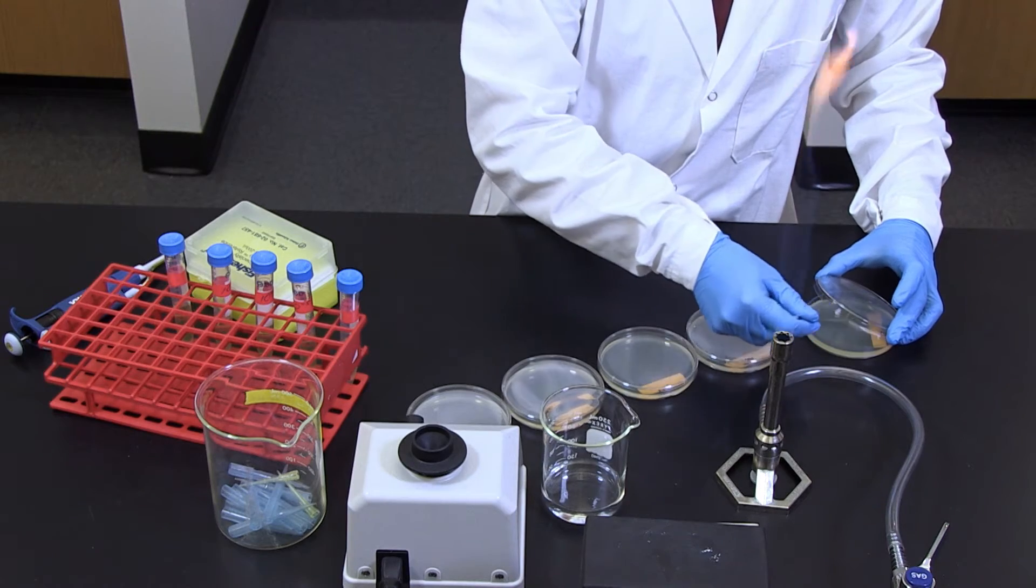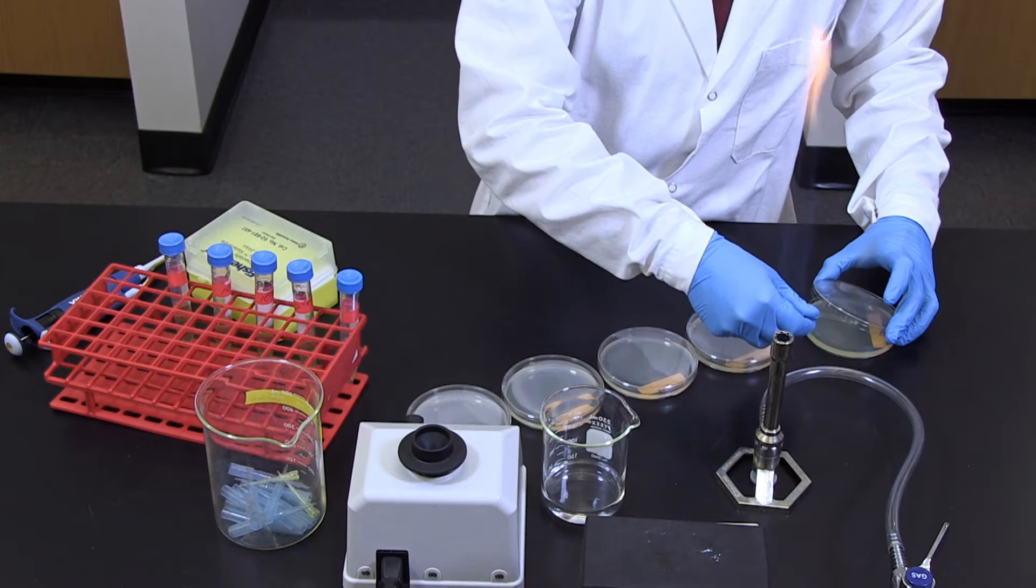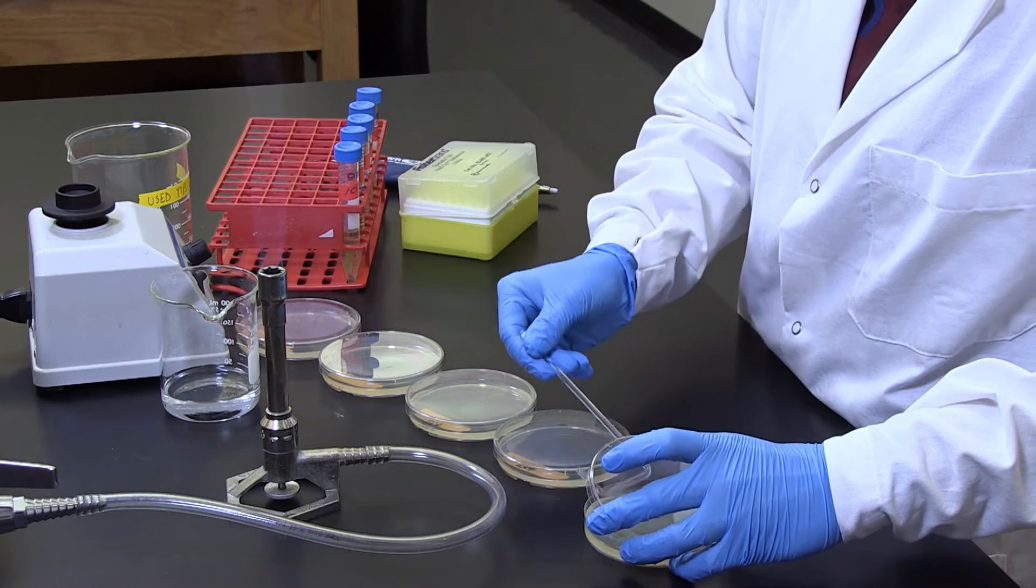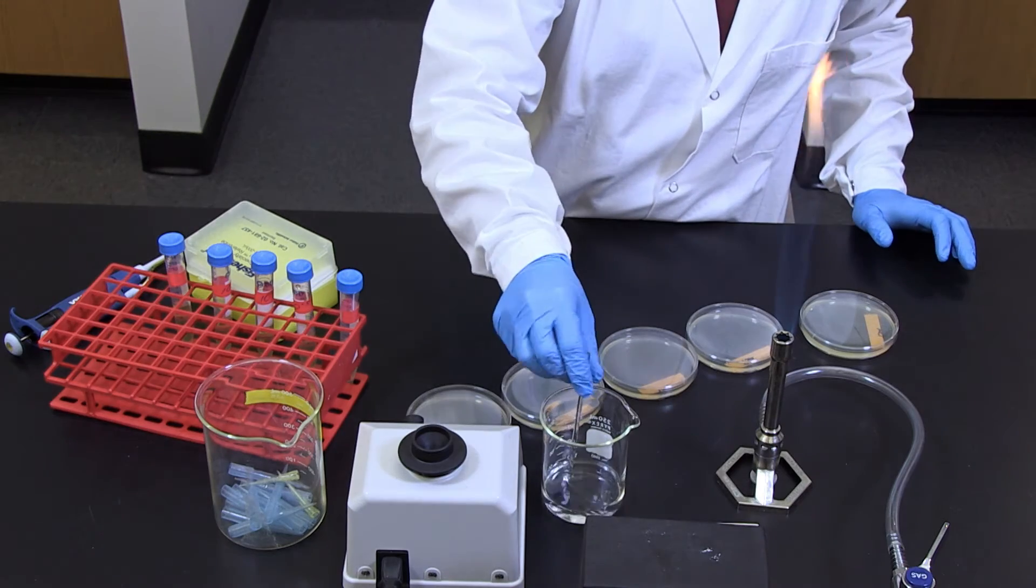The diluted samples from ten negative one to ten negative three are highly concentrated, which will produce confluent growth on the plates. Therefore, they should not be used.